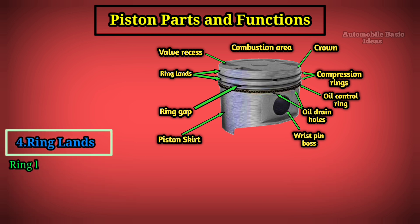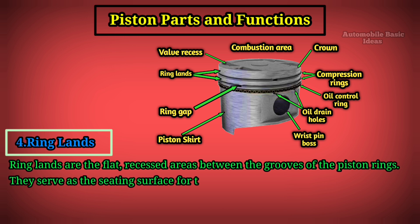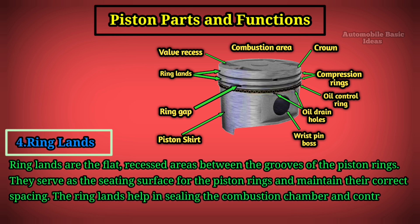Ring Lands: Ring lands are the flat, recessed areas between the grooves of the piston rings. They serve as the seating surface for the piston rings and maintain their correct spacing. The ring lands help in sealing the combustion chamber and controlling oil consumption.